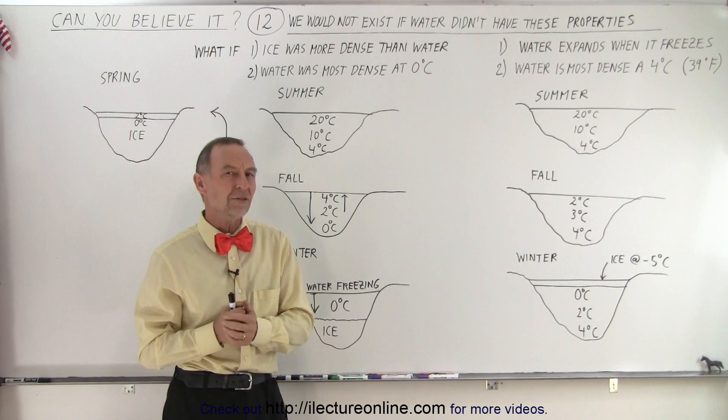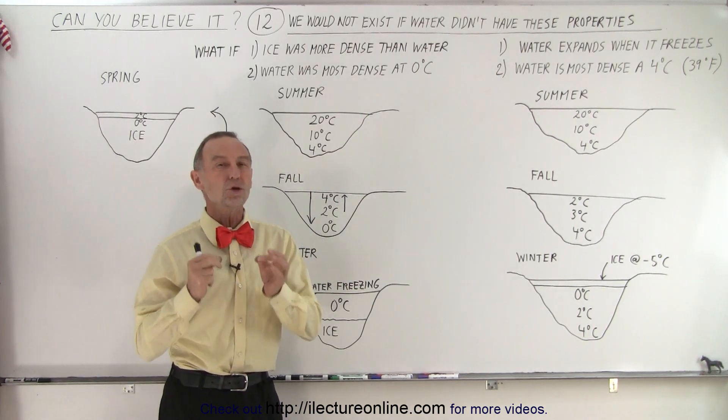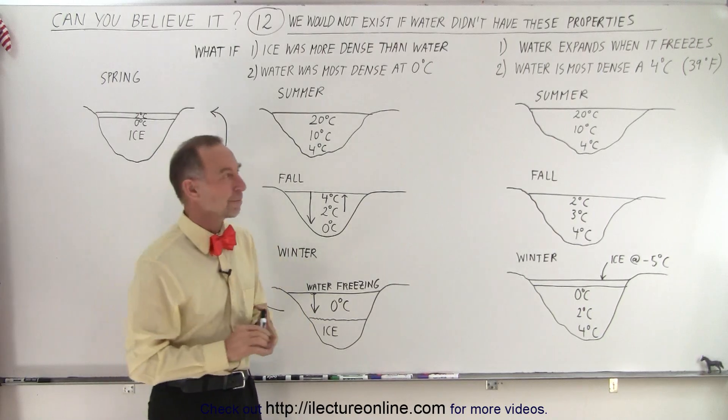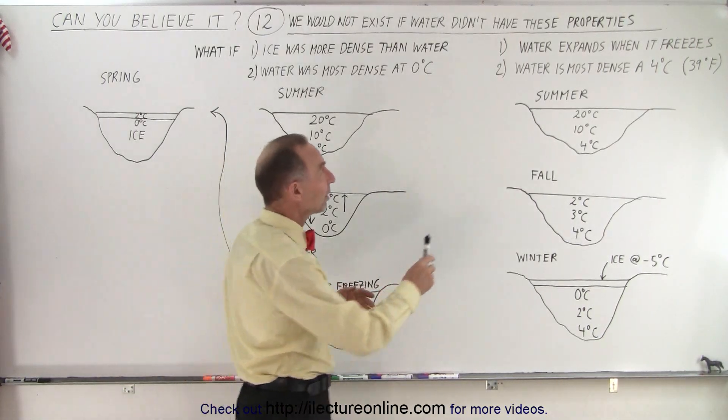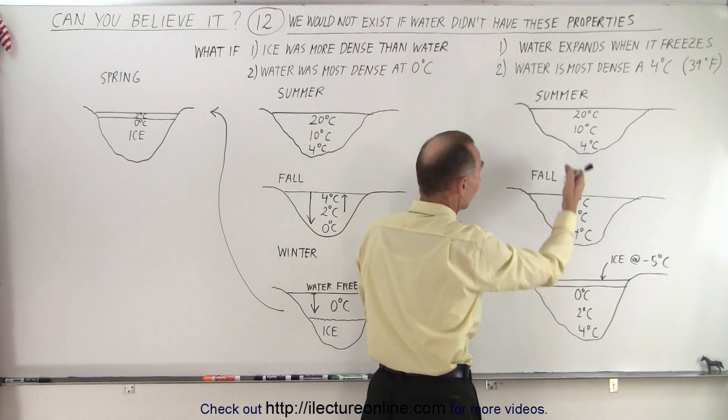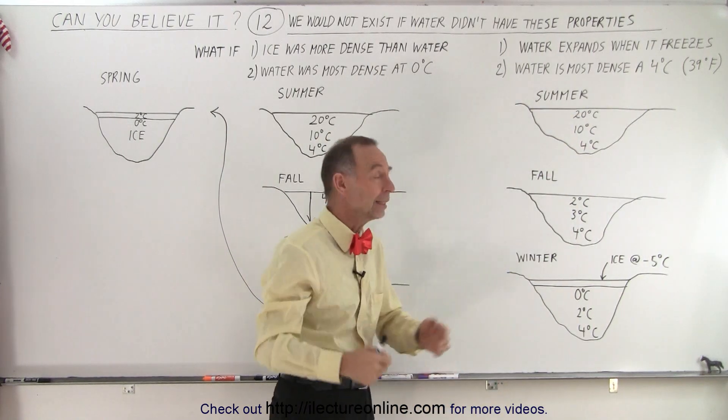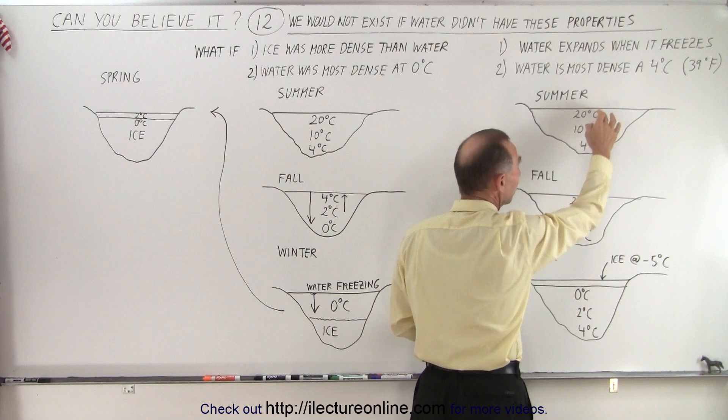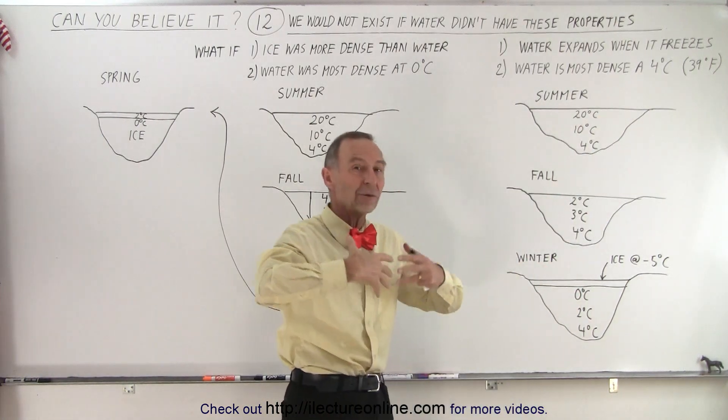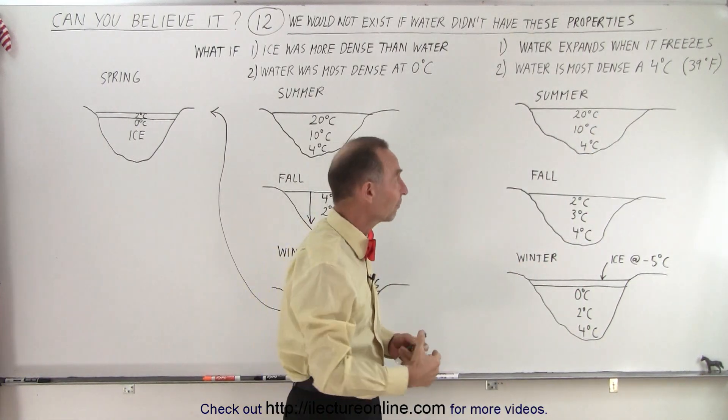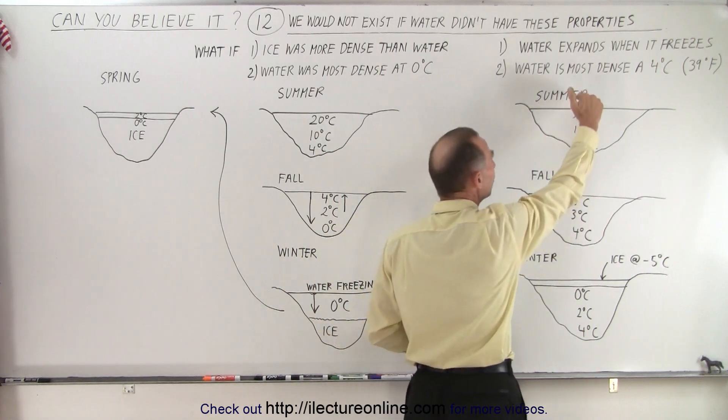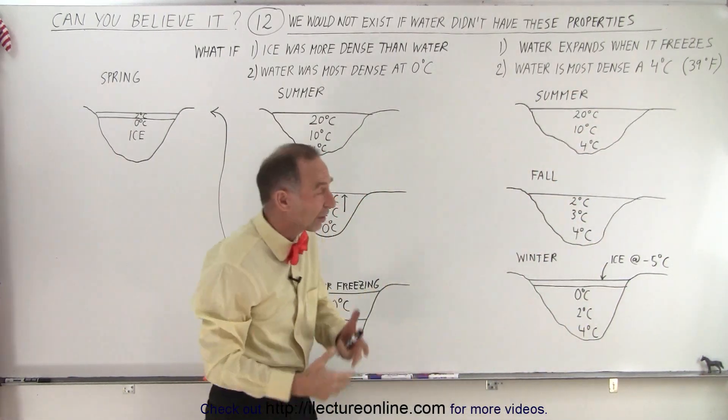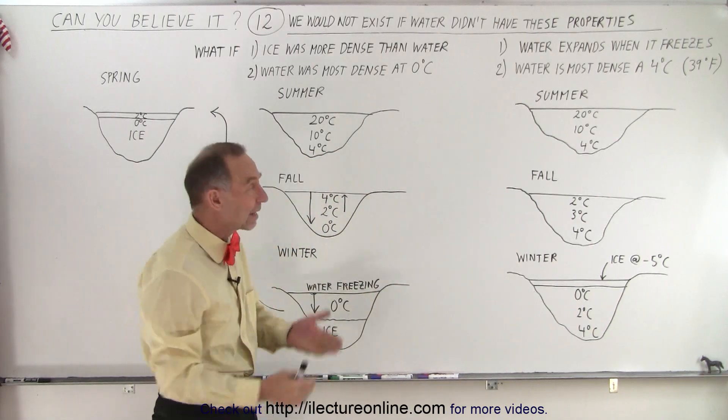Those two properties combined make a huge difference for life on Earth. So let me explain. So we know that these are the two properties water has. For example, in the summer, when we have a big lake, the water at the top will be warm. And of course, it'll be less dense because water begins to expand after it becomes warmer than four degrees centigrade. But as you go deeper in the lake, it gets colder and towards the bottom, it may be four degrees centigrade. So let's assume that's how that lake is in the summertime.